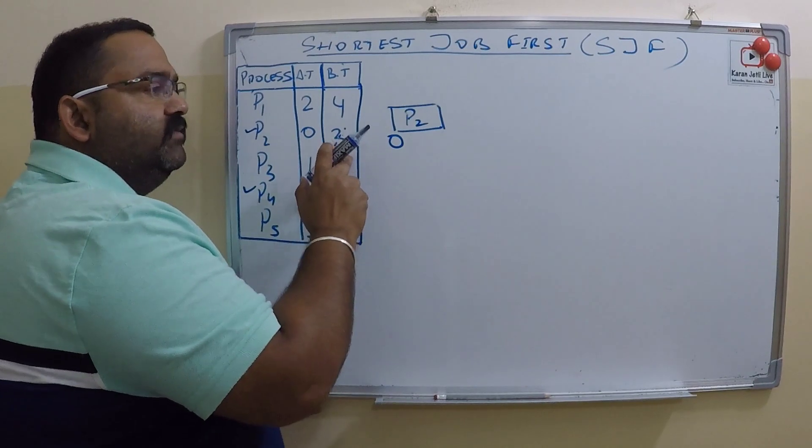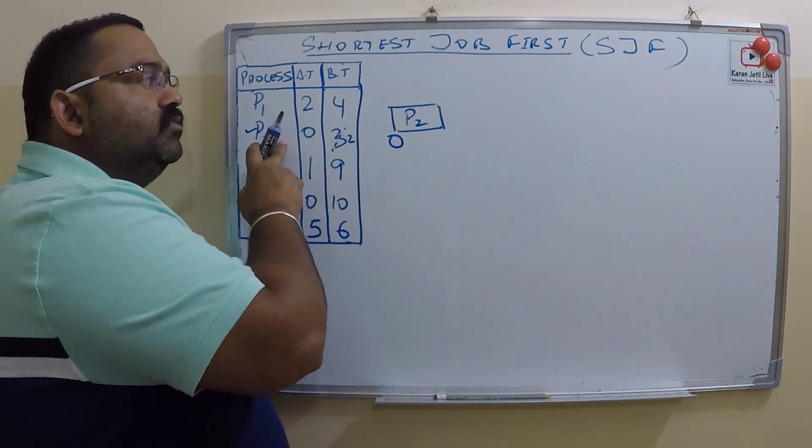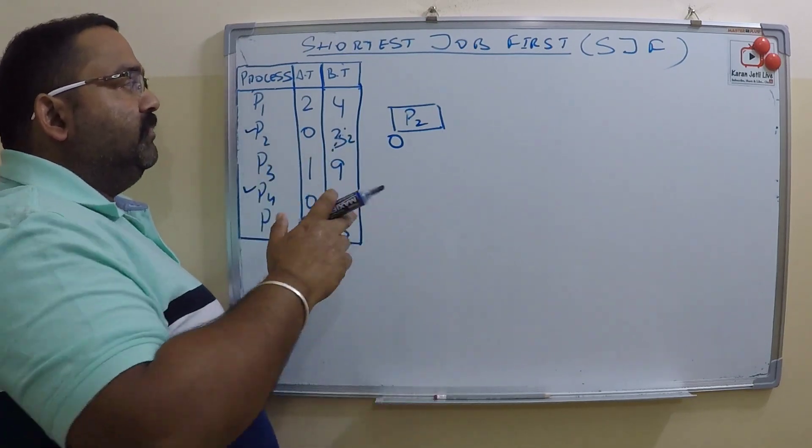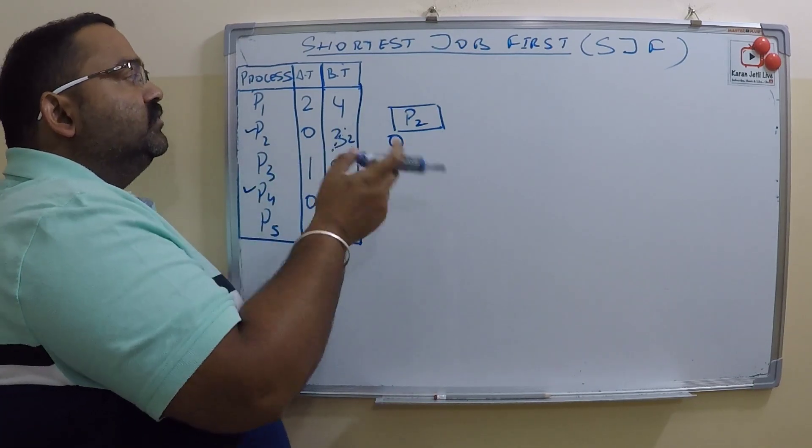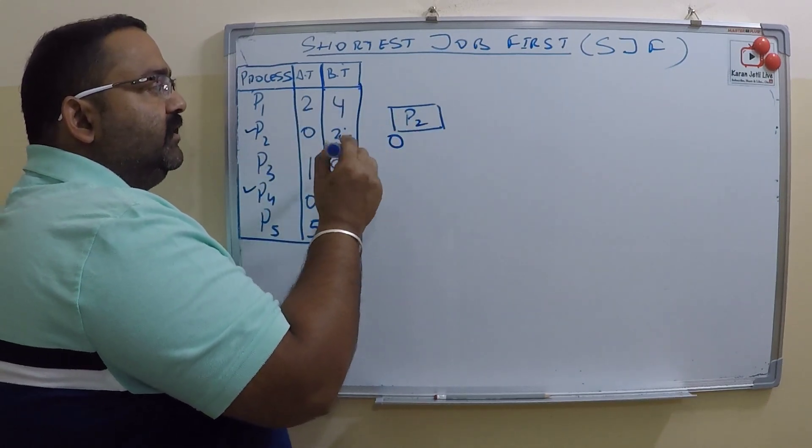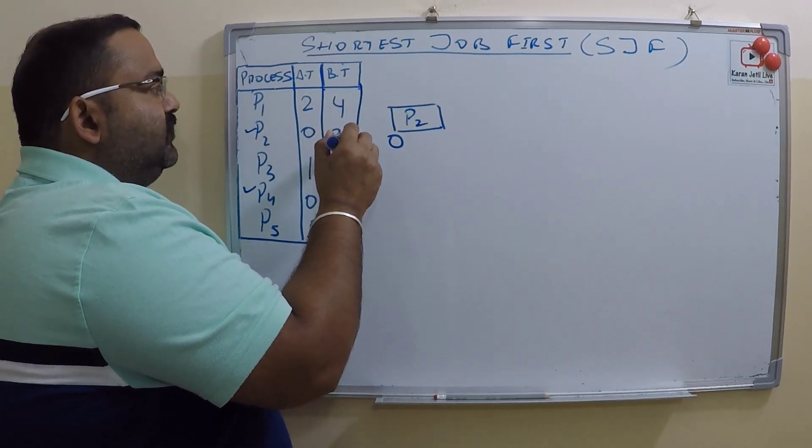So it will continue with P2. Then after another one second, at time two, P2 has already finished two seconds. Now one is left.